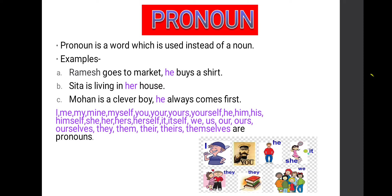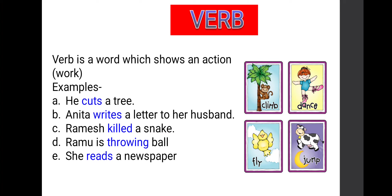Overall, noun and pronoun are similar — both represent person name, place name, animal, bird or thing. But one difference is that nouns are used directly to represent person, place, animal, bird or thing, while pronouns are used indirectly in the place of a noun. Noun means a name of a person, place, animal, bird or thing; pronoun means it is used instead of a noun.